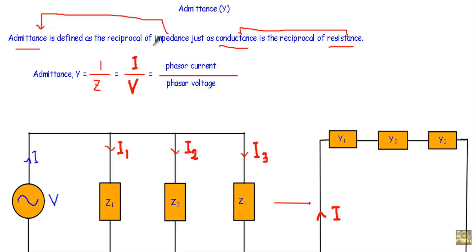In the case of an AC circuit, impedance indicates the opposition to current flow. Therefore admittance indicates the easiness of current flow in an AC circuit. Admittance is usually expressed with capital Y, and the unit of admittance is Mho or Siemens.